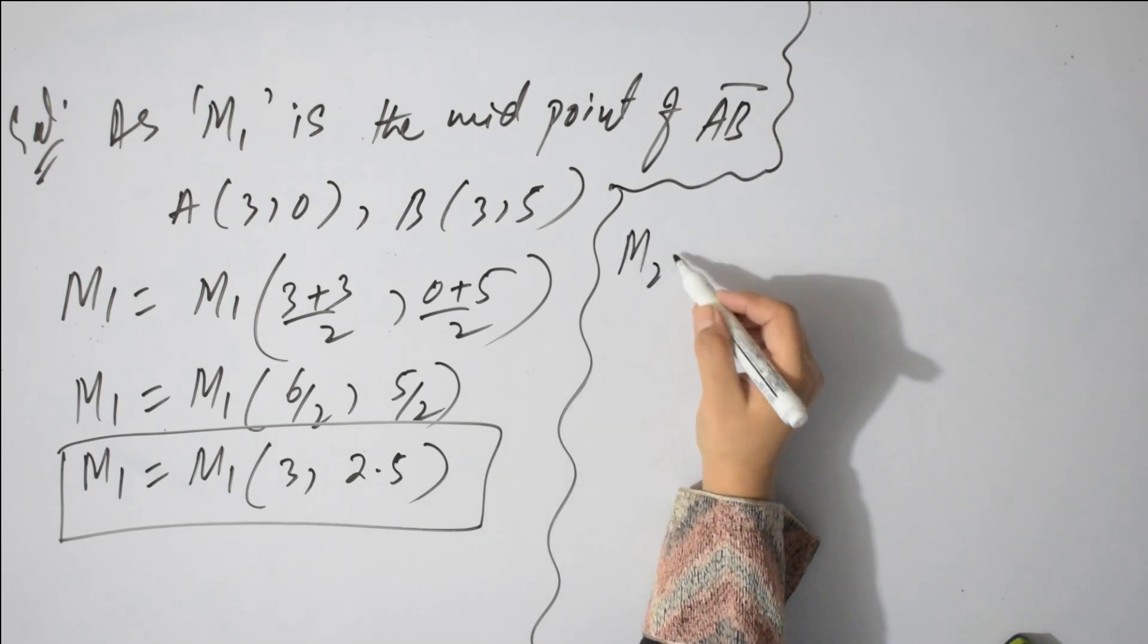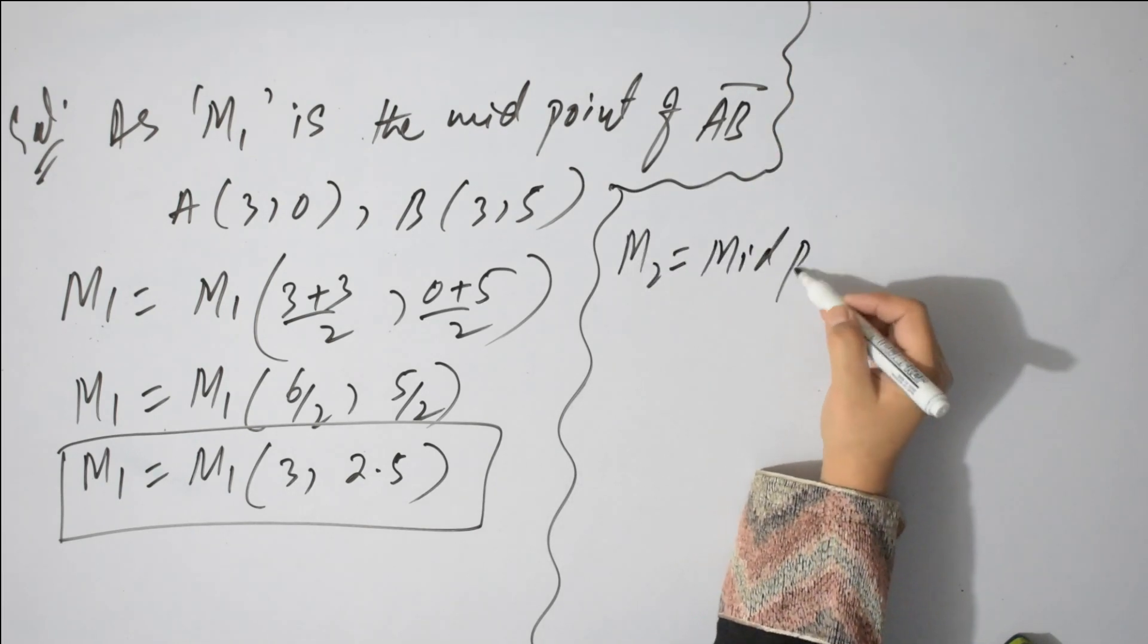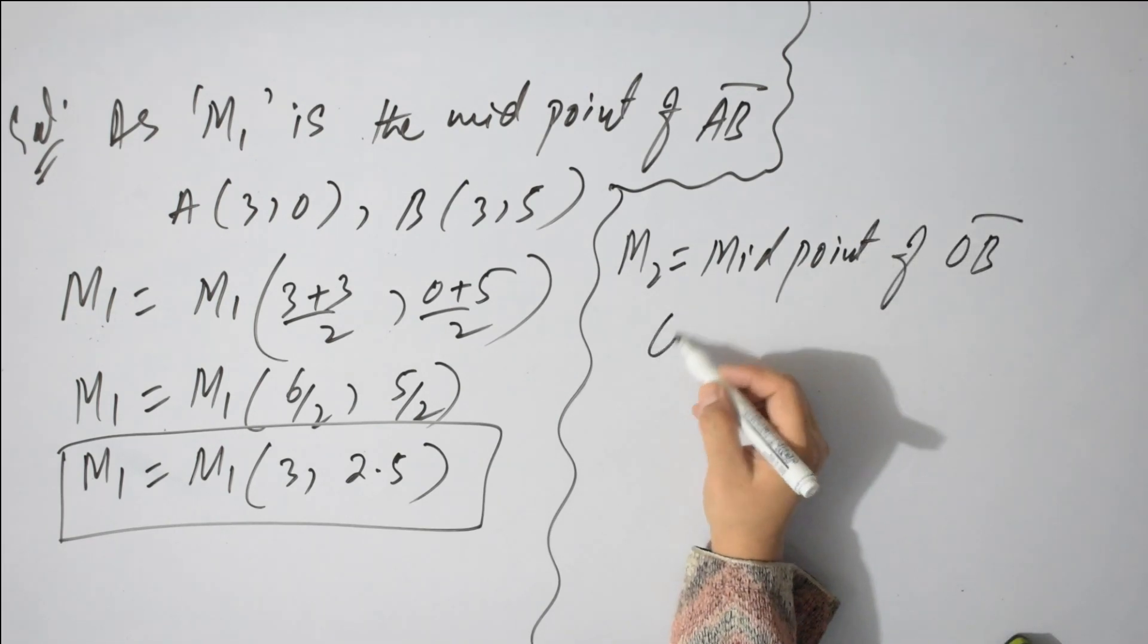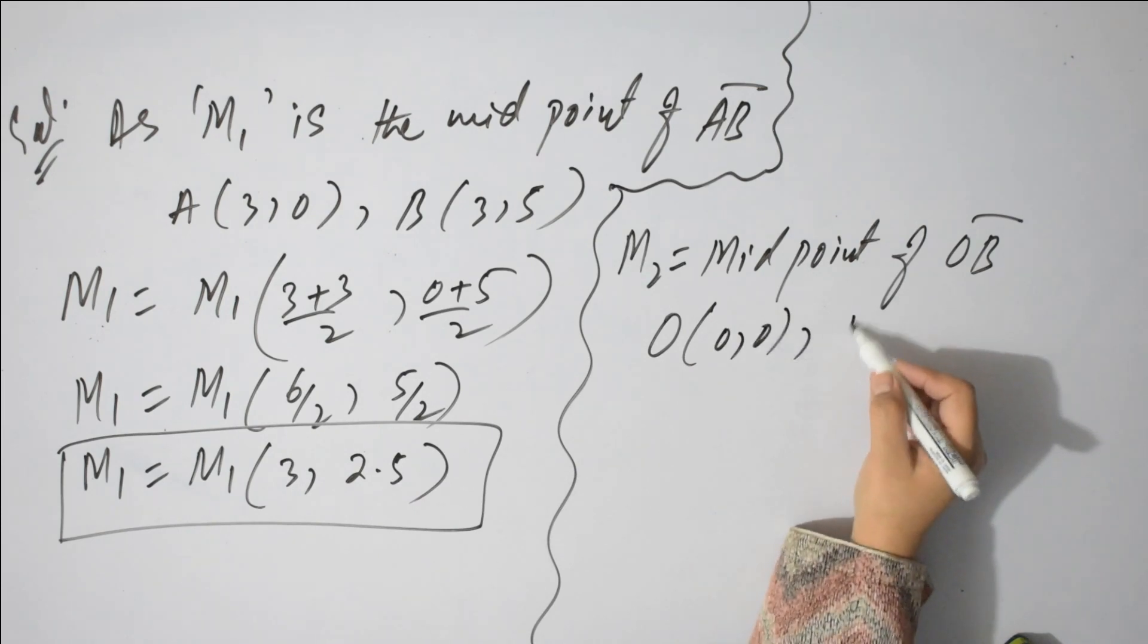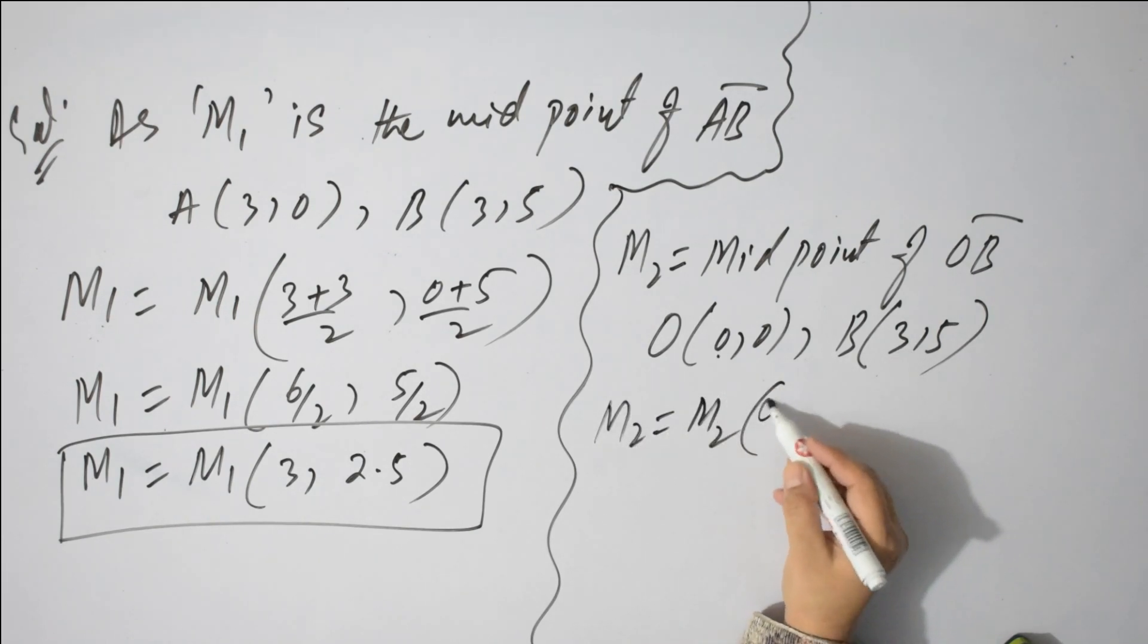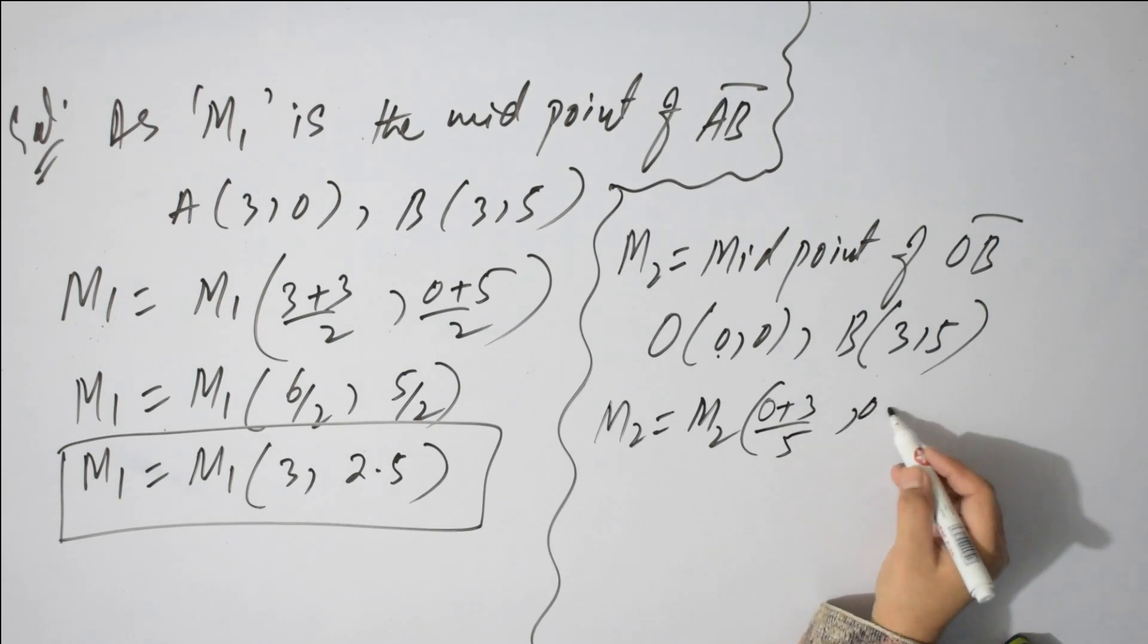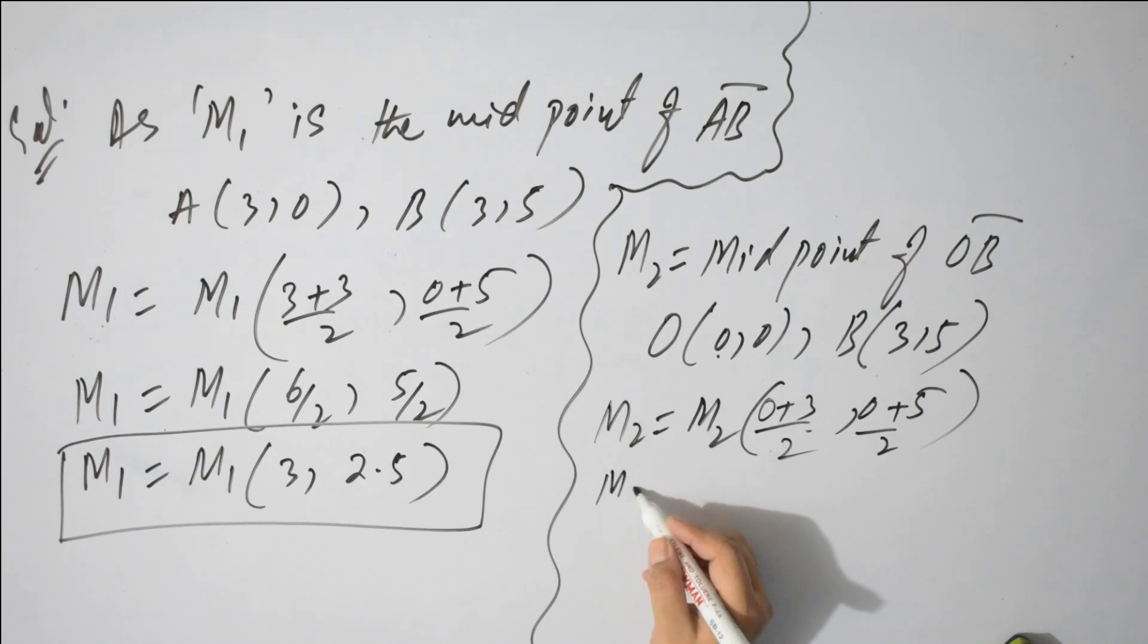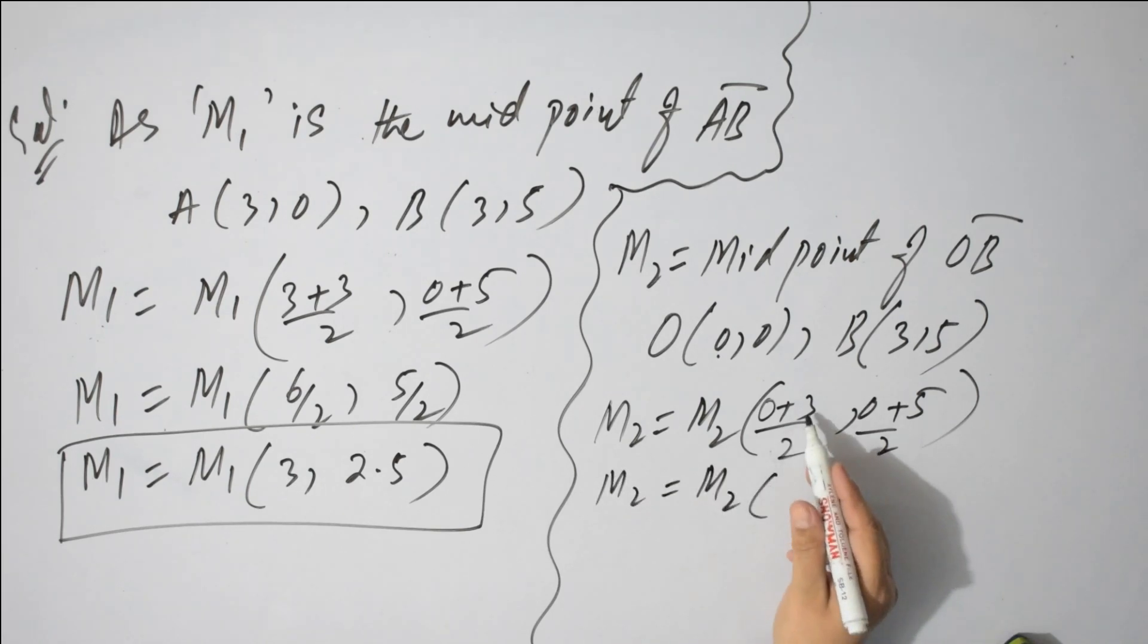Now M2, it is midpoint of OB. Coordinates of O (0,0) and coordinates of B (3,5). M2 midpoint = ((0+3)/2, (0+5)/2) = (3/2, 5/2) = (1.5, 2.5). This is my midpoint of OB.